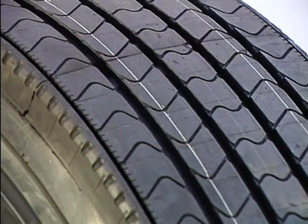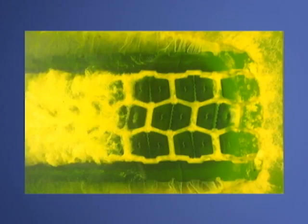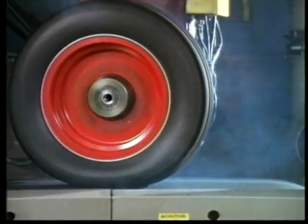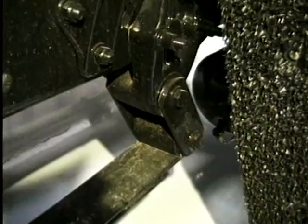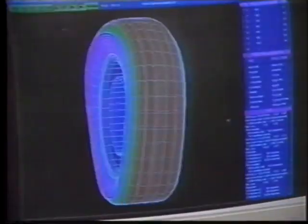A tire with perfect wear would have a well-formed footprint. Additionally, the weight would be evenly distributed over the footprint, maximizing the tire's life. Keep in mind, the tire's footprint is influenced by tremendous forces as it rotates. Load and inflation, suspension, and terrain change the tire's shape constantly.